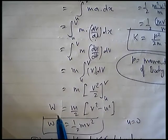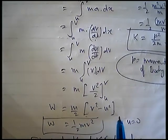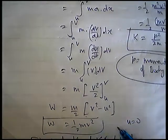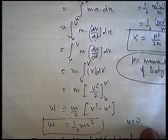Therefore, work done equals final kinetic energy minus initial kinetic energy. When final kinetic energy equals initial kinetic energy, what do we get? Work done equals the change in kinetic energy. Simple — it is completely proven.